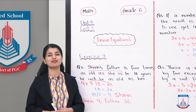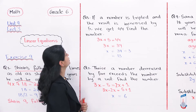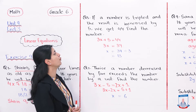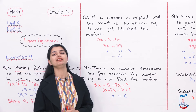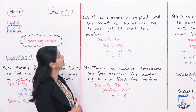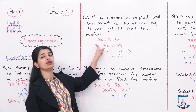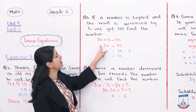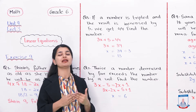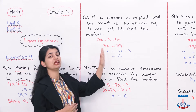Let's look at question number 5: If a number is tripled and the result is increased by 5, we get 44. Find the number. We call the number x. If you triple it and add 5, that gives us 3x plus 5, which equals 44.